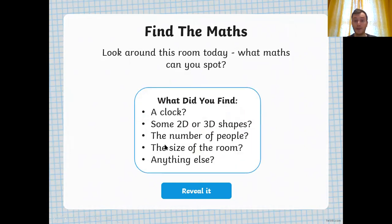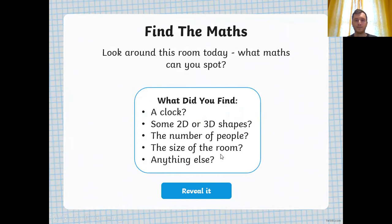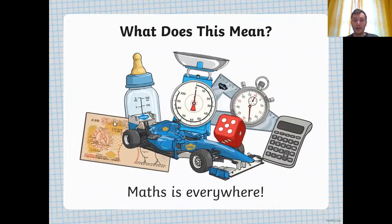Some of your ideas might have been a clock, some shapes, the number of people who are with you in the room, the size of the room and lots and lots of other things. So what does this mean? Well, it means maths is everywhere and in everything we do. And we use maths all across our learning, all across our lives. And it's really important. And that's why we spend so much time in school learning maths. So you can have the best opportunities in life to access the jobs that you want to do. Because as we touched on earlier, every job will involve maths.